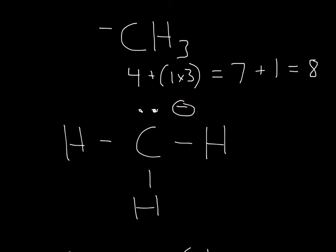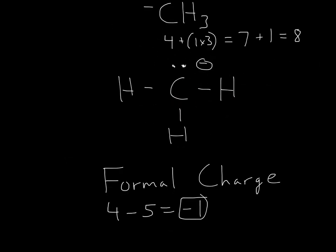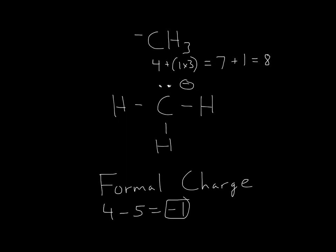Now for formal charge, why this is negative is because if we look at the periodic table, carbon is in group 4, so therefore we'll put a 4 there. And then we'll count the lone pairs and bonds, so it has 1, 2, 3 bonds, and then 1, 2 electrons in its lone pair, so then therefore it'll be 1, 2, 3, 4, 5. So 4 minus 5 will be negative 1, so it'll have a negative 1 charge.